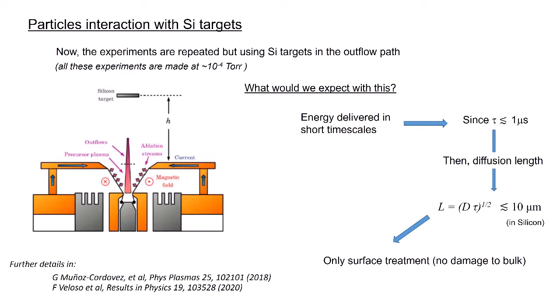By using a characteristic time of roughly one microsecond, we can estimate that the energy transfer to the silicon will reach a penetration depth of 10 micrometers at most, so no damage to the bulk will be affected.